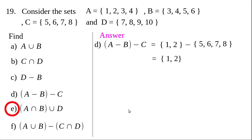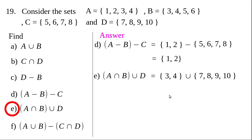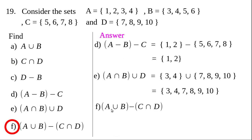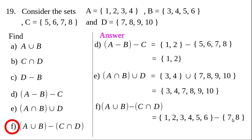Question (e): A intersection B union D. First find A intersection B, which is {3, 4}, then union D. Writing all elements present in both sets gives {3, 4, 7, 8, 9, 10}. For question (f): A union B minus C intersection D. The elements in the first set not present in the second set gives {1, 2, 3, 4, 5, 6} as the solution.